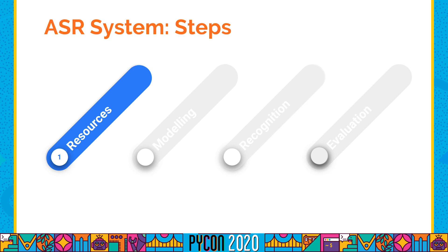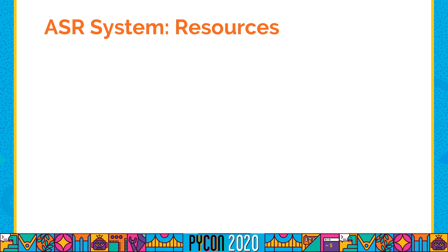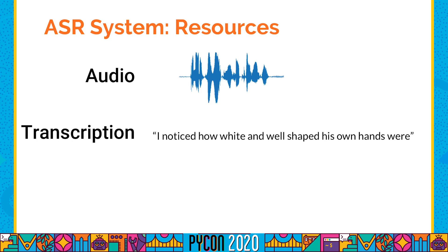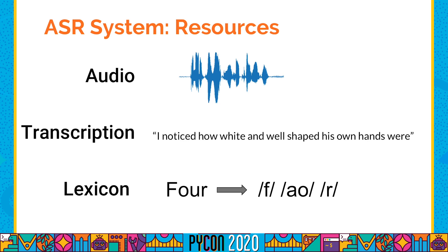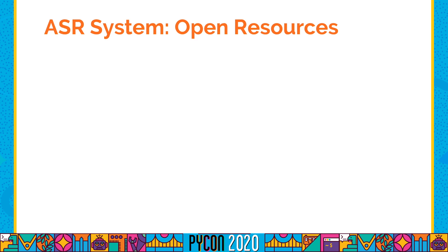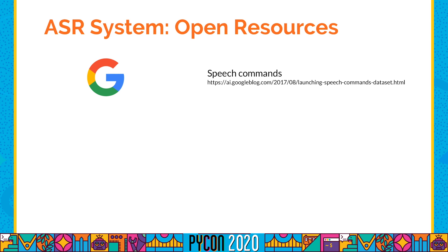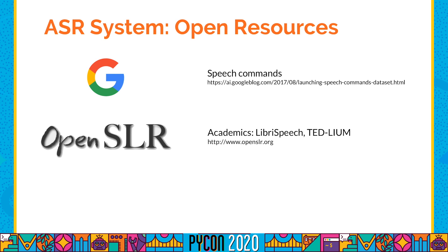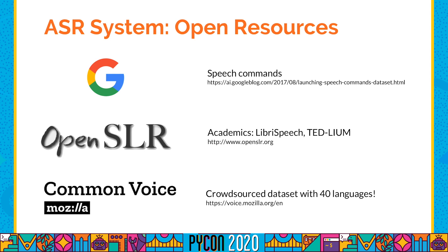Let's talk about resources — where we can get them and how to prepare them for the modeling part. The resources we need are: the audio files (the speech signal), the transcription (the text), and the lexicon, which provides the phonetic transcription for the words we are considering. Some open resources include the Speech Commands dataset from Google, which is great for starting with ASR because it contains short utterances with isolated words. For something more advanced, you can check the Open Speech and Linguistic Resources website, which contains datasets used in academia, such as LibriSpeech and Terlium.